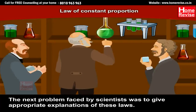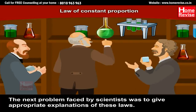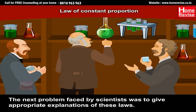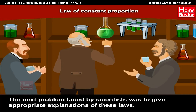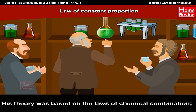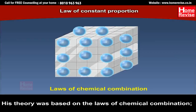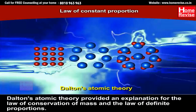The next problem faced by scientists was to give appropriate explanations of these laws — if you state a law, you have to explain it. Dalton's atomic theory was based on the laws of chemical combination and provided an explanation for the law of conservation of mass and the law of definite proportions.